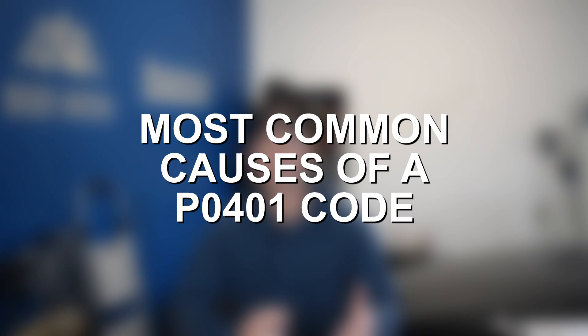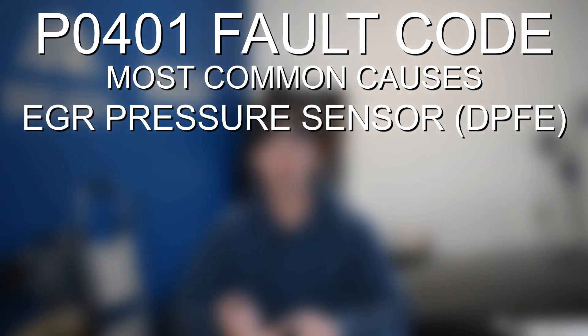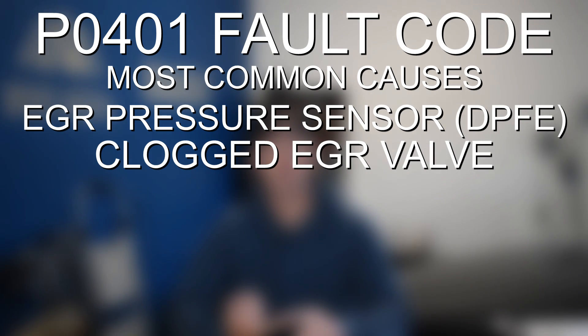There are tons of different things that can cause a P0401, but there are probably six or seven that are most likely and two or three that are usually the cause. Starting with the most likely: the first is going to be the EGR pressure sensor, also known as the DPFE sensor. The second is going to be a clogged or dirty EGR valve. And the third is going to be a clogged EGR cooler.